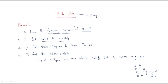The second purpose is to find closed-loop stability. The third purpose is to find the gain margin and phase margin — these are very important terms in the Bode plot. Gain margin means how much gain the system can contain before becoming unstable. Phase margin is similar — it is the phase of the system before it loses stability.